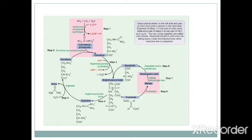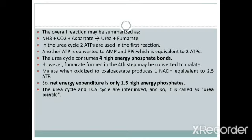In the fourth step, fumarate enters the TCA cycle and is converted to malate, then to oxaloacetate, which is transaminated to aspartate — this is the link between the urea cycle and the TCA cycle. The overall reaction of the urea cycle can be summarized as: ammonia + carbon dioxide + aspartate → urea + fumarate. In the urea cycle, two ATPs are used in the first reaction and another ATP is converted to AMP (equivalent to two ATPs), so the cycle consumes four high-energy phosphate bonds in total.